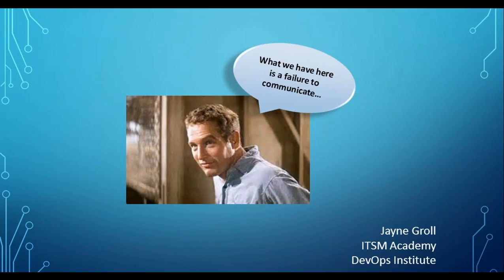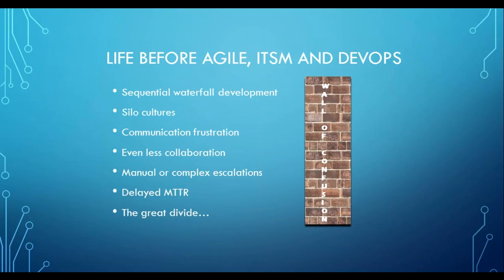Many of you are now starting to have experiences with DevOps, continuous delivery, continuous integration, and automated testing — all of which really has to do with when things go right. We're going to talk about how IT has gotten to where we are today and how we can incorporate communication improvements to help us go faster. So what we have here is a failure to communicate. When dinosaurs walked the earth — before agile, IT service management, and DevOps — waterfall development was the norm, very sequential, and IT grew up in silos because IT is an organization of specialists.